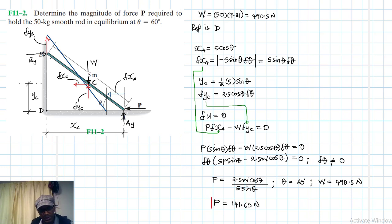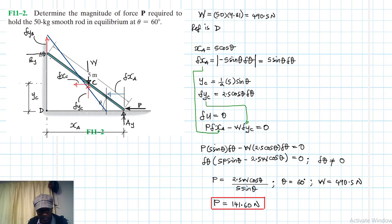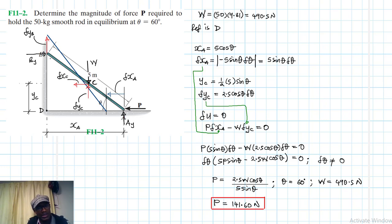We have found the value of P = 141.6 N that ensures the system is in equilibrium. I hope this video was helpful. If it was, give me a thumbs up, keep subscribing and liking the channel — bye bye!